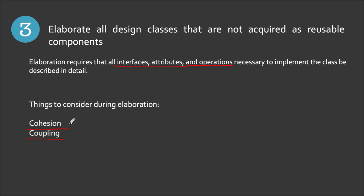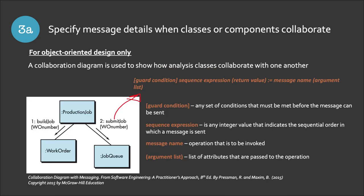If you are working in an object-oriented environment, you need to follow the succeeding steps. Let's proceed to step 3A. We need to specify the message details when classes or components collaborate. A collaboration diagram is used here — it shows how analysis classes collaborate with one another. This is essentially what sequence diagrams also do, and you can alternatively use collaboration diagrams instead.